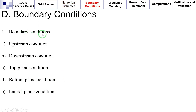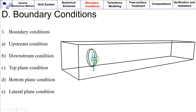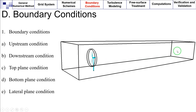Boundary conditions: You need to specify the boundary conditions on each boundary of the computational domain, such as the upstream boundary, downstream boundary, top boundary, bottom boundary, and lateral or side boundaries. For example, in the case of a wind turbine simulation, the upstream boundary can be assumed to be a velocity inlet, downstream boundary a pressure outlet, lateral boundaries symmetry, and the bottom boundary a wall — which can be no-slip or slip.